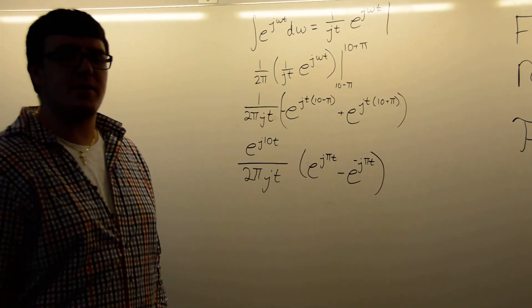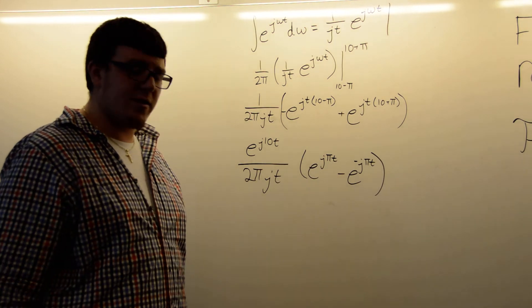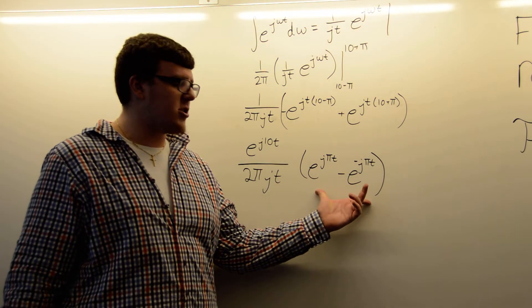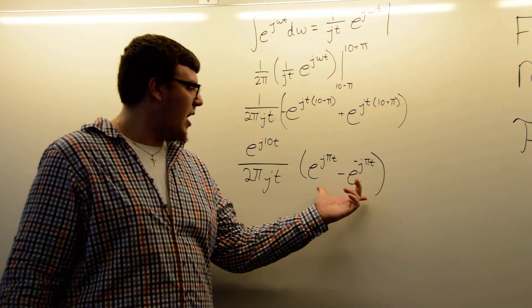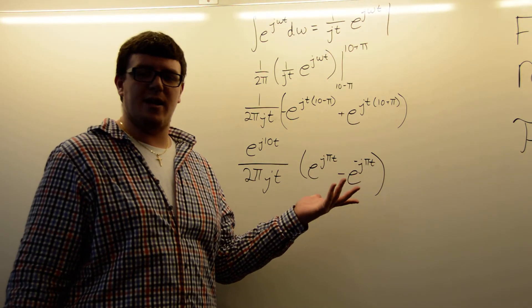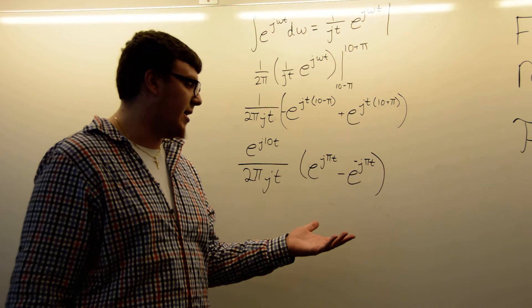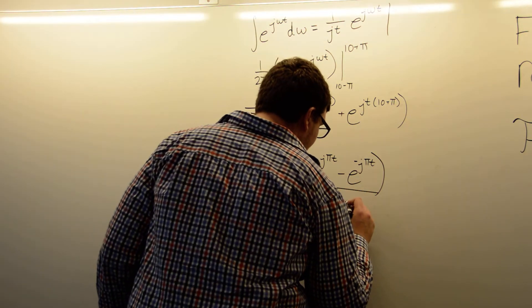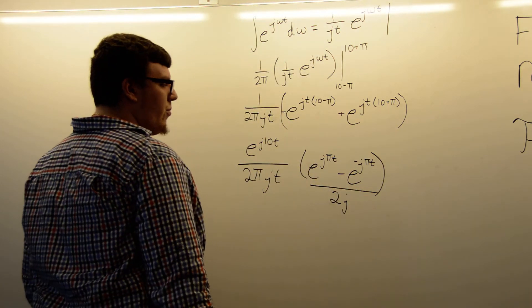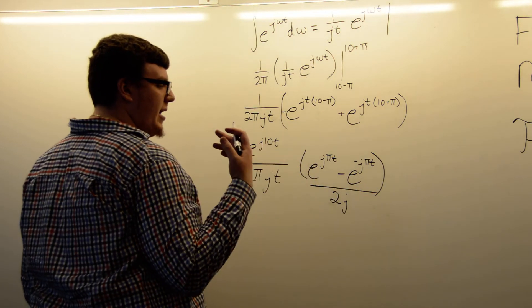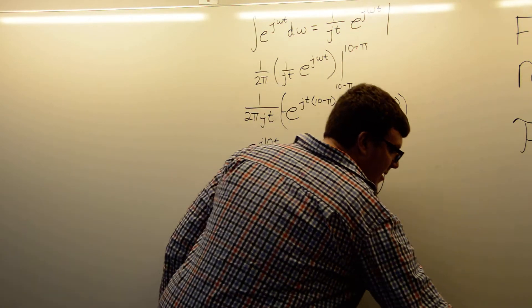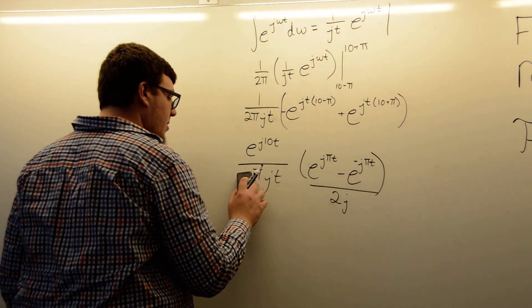And that's what our function, you would think you could stop here. But there's a little more simplification we can do. This function in here is actually a form of the Euler's identity formation of sine. So, generally, if we had this over 2j, we would get a sine function. Luckily, we have a 2 and a j over here.